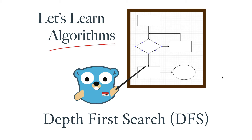The first algorithm we're going to talk about is the depth first search. The depth first search and the breadth first search are both similar in a lot of ways, but we're just going to go over one of them first, and then as we go to the breadth first search you'll see how the two sort of relate to each other and how they're similar.